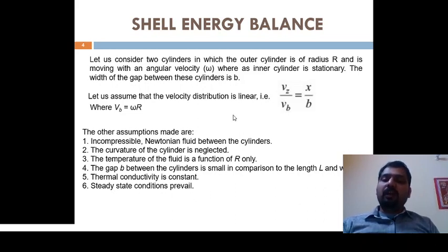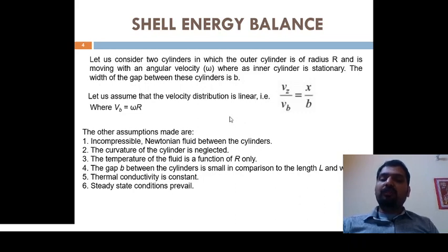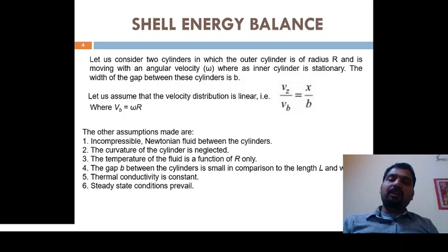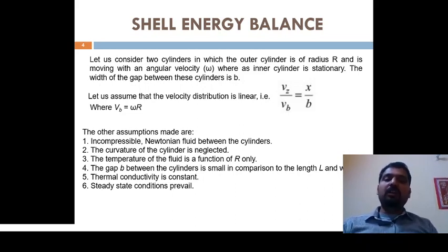We have already discussed that the velocity is a function of distance, because one layer is stationary and the other is moving. The velocity varies linearly with distance, expressed as vz / Vb = x / b.